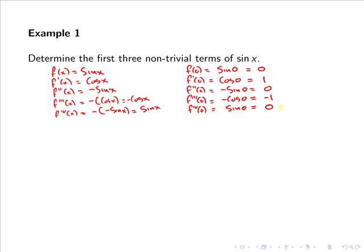If you look closely you can see that there is a cyclical pattern emerging. We started off with sin x and evaluated it at 0 to get 0. After 4 differentiations we get f⁴(x) equals sin x, and again evaluating at 0 we get 0. So the next term should evaluate to give us 1. Checking that: f⁵(x) equals the derivative of sin x, which is cos x, and evaluating at 0 gives cos 0, which does indeed give us 1.